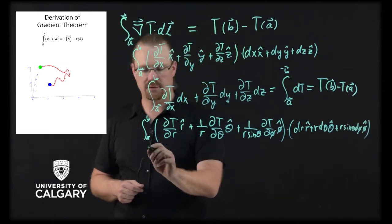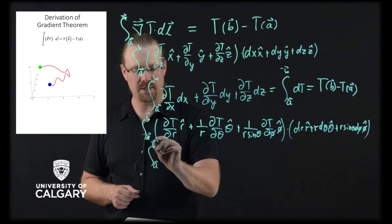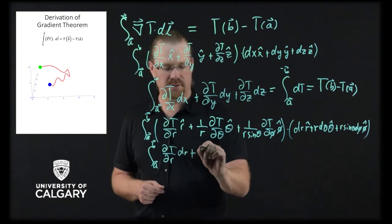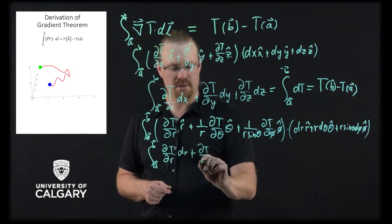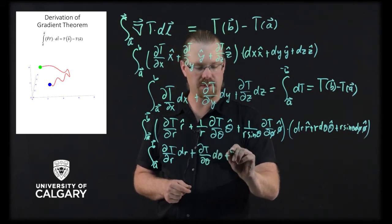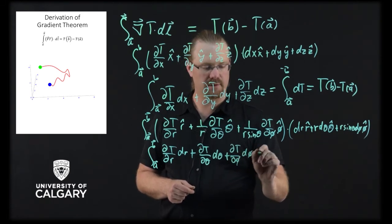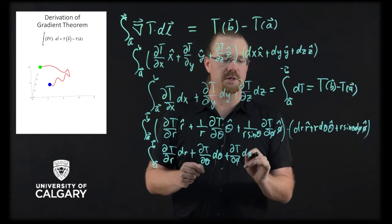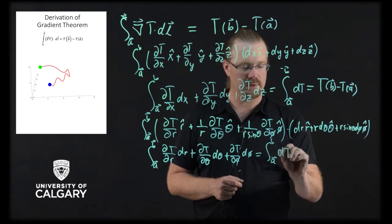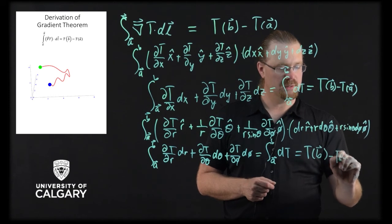Putting those together, we're left with the integral from a to b of dT/dr dr, plus dT/d theta d theta, plus dT/d phi d phi. And of course, since these are the only three variables that it depends on, this becomes the integral from a to b dT, which is just T(b) minus T(a).